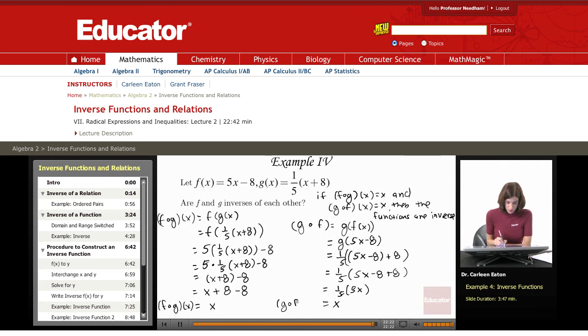So g composed with f of x is also x. Are these inverses of each other? Yes. f of x and g of x are inverses of each other because these two hold true: f composed with g of x is x, and g composed with f of x is x. That concludes this lesson. Thanks for visiting.